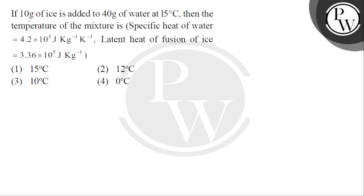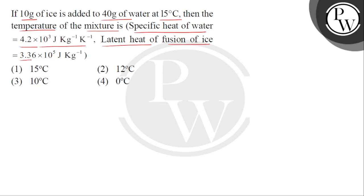Let's read the question. If 10 grams of ice is added to 40 grams of water at 15 degrees Celsius, then the temperature of the mixture is — given that specific heat of water equals 4.2 × 10³ joule per kg per Kelvin, and latent heat of fusion of ice is 3.36 × 10⁵ joule per kg.